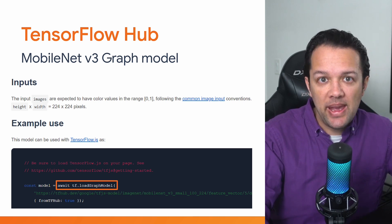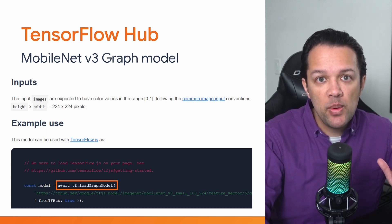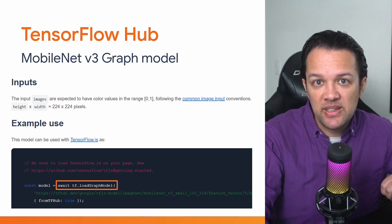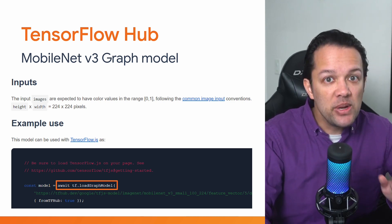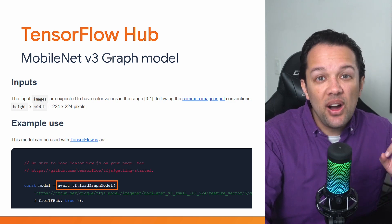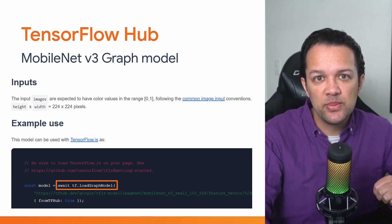If you open up the page for one of these feature vector MobileNet V3 models, you can see from the JS documentation that it's in the form of a graph model. As you know from previous chapters, graph models are highly optimized for running as fast as possible.